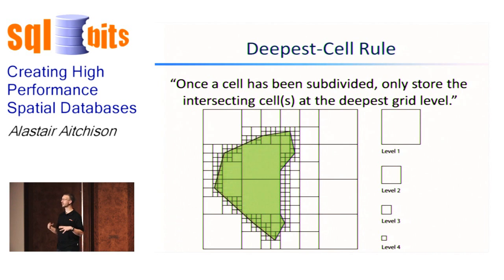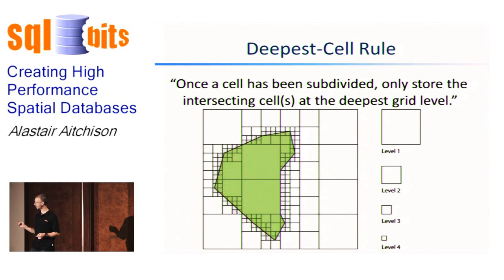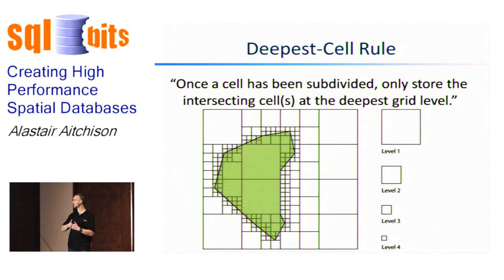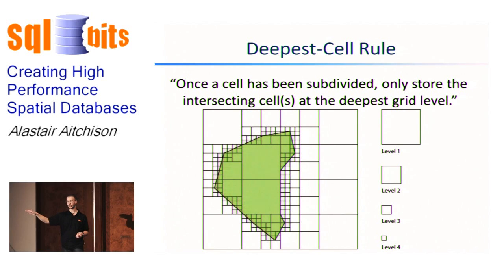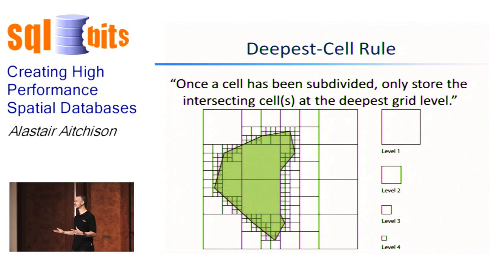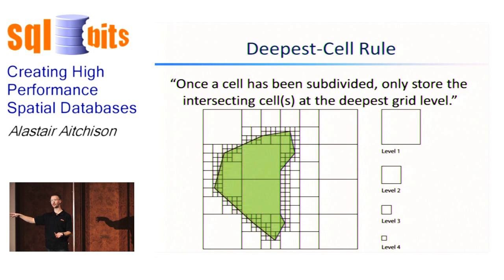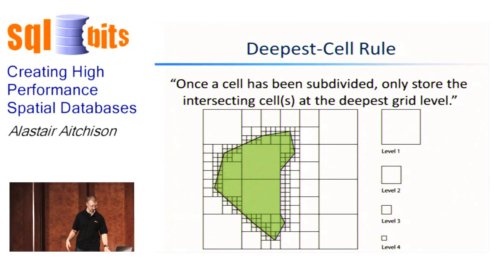The deepest cell rule is like the covering rule in reverse: if a cell has been subdivided down to a deeper level, only store the intersecting cells at the deepest grid level. If a tiny level four cell around the edge of the geometry partly intersects it, we know by implication that the level three cell containing it must also partially intersect it. So when we've drilled down to a deep level, don't bother storing the level one and level two cells as well.